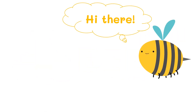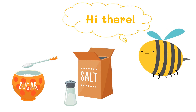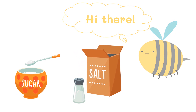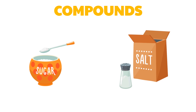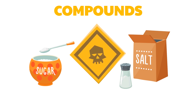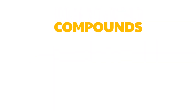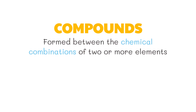Have you ever seen sugar and salt side by side without any labels? How do you differentiate one from the other? There is a wide variety of compounds and most of these look physically the same, like white sugar and table salt. It would be easier to determine these two substances by tasting them, but this method of identifying substances does not apply to other compounds since some of them can be toxic.